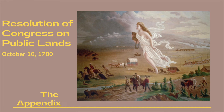Resolved, that the unappropriated lands that may be ceded or relinquished to the United States by any particular states, pursuant to the recommendation of Congress on the 6th day of September last, shall be disposed of for the common benefit of the United States and be settled and formed into distinct Republican states, which shall become members of the Federal Union and shall have the same rights of sovereignty, freedom, and independence as the other states; that each state which shall be so formed shall contain a suitable extent of territory.